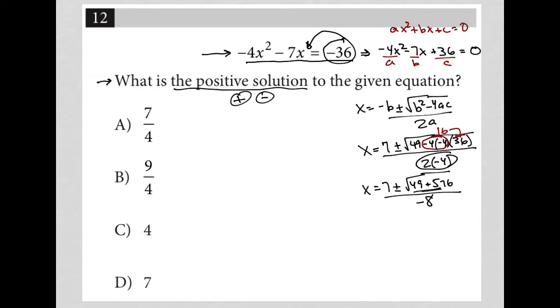And then 49 plus 576 is 625. So I have x equals 7 plus or minus square root 625 all over negative 8. And from here, I'm going to have two separate fractions.